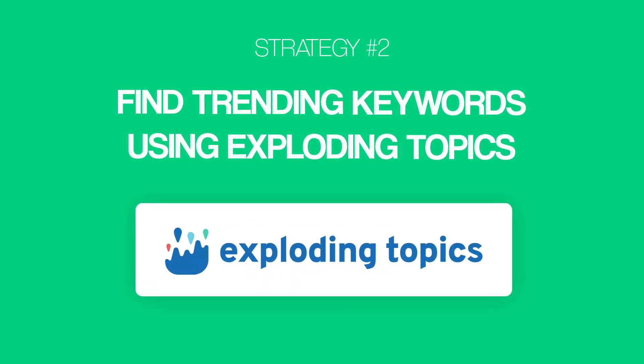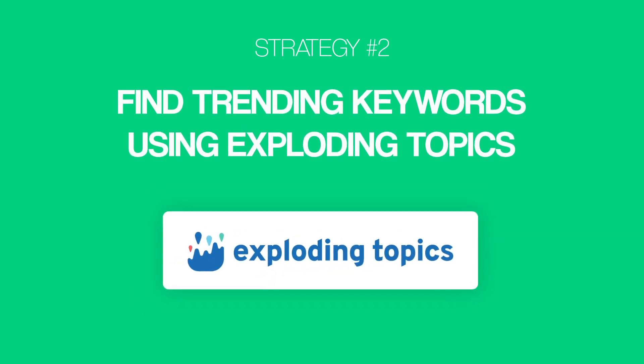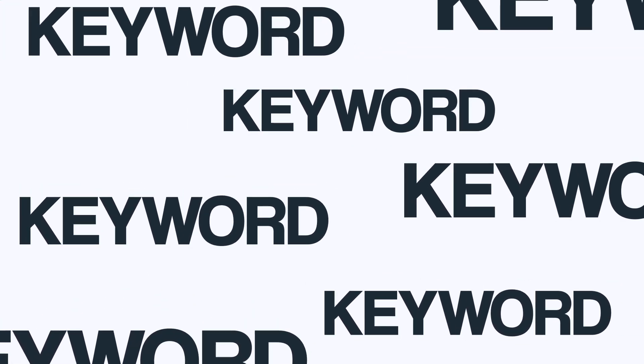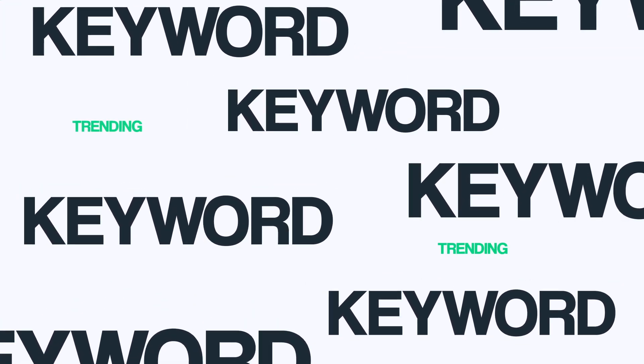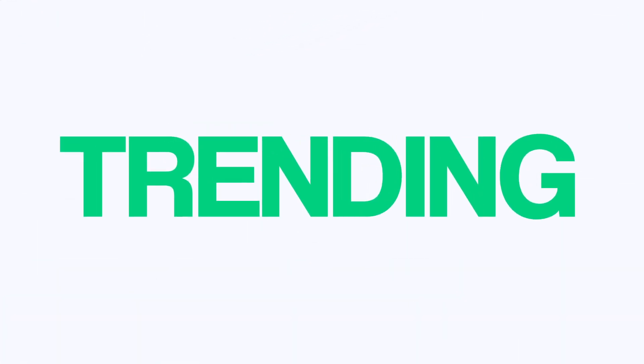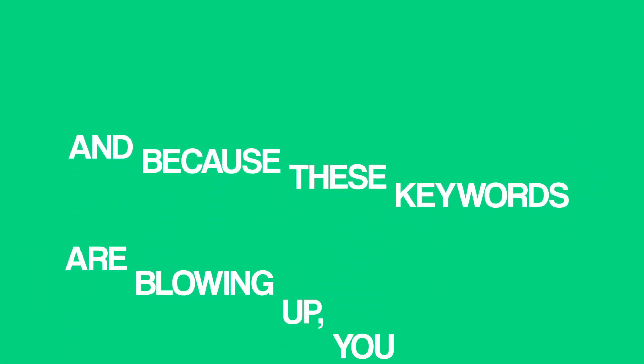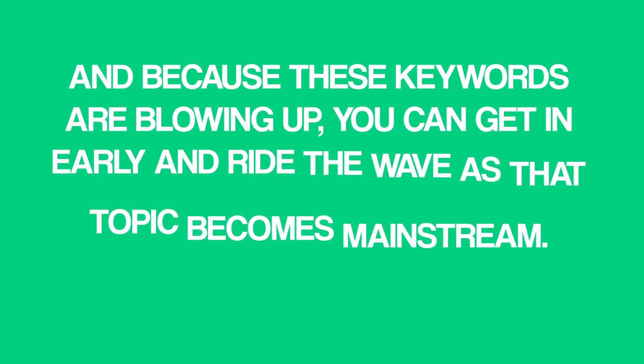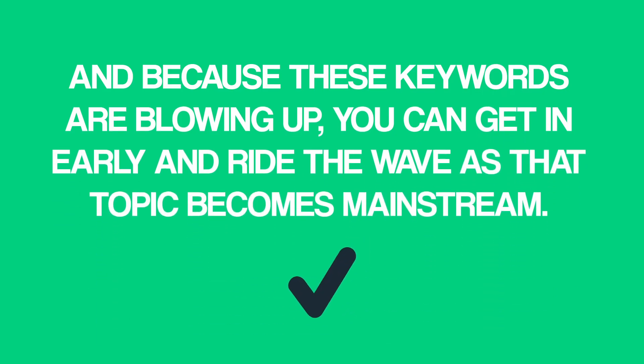Now it's time for our second strategy: find trending keywords using Exploding Topics. If your channel is brand new, or if you just want to find keywords that are easy to rank for, you want to target trending keywords. Unlike older established keywords, trending keywords are brand new, which means they're not super competitive yet. And because these keywords are blowing up, you can get in early and ride the wave as that topic becomes mainstream.